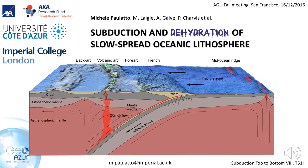The title is Subduction and Dehydration of Slow Spread Oceanic Lithosphere, and was presented at the session Subduction Top to Bottom. The work was carried out at GeoAzur, part of the University of the Côte d'Azur, and was supported by an AXA Research Fund postdoctoral fellowship and by the OBSIVA project funded by a prize of the Foundation Simone and Cino del Duca through the French Academy of Science.